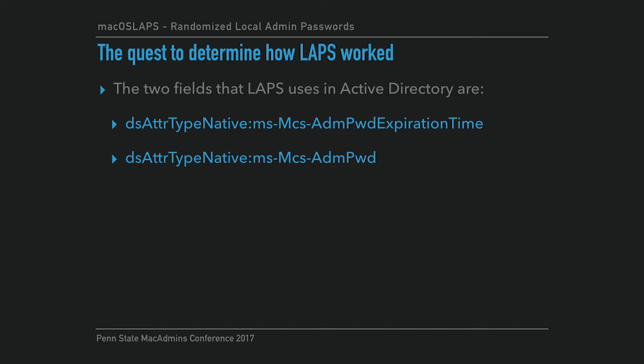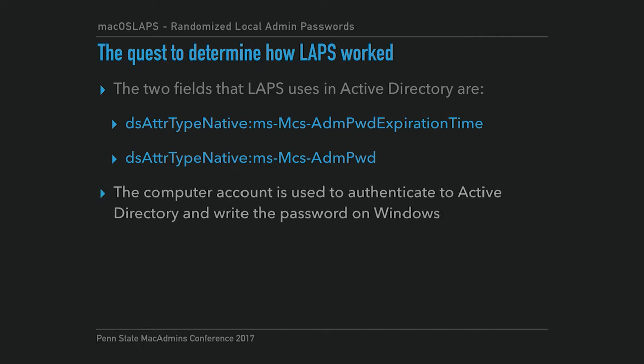Even though your Macs won't have these attributes by default, you can add them. The computer account is used to authenticate to Active Directory and write the password on Windows, because the computer account is able to write attributes to itself. However, it cannot read that password field — it can read the expiration time, but it can't read the password field. So even if somebody got the computer account, they still couldn't figure out that local admin password.